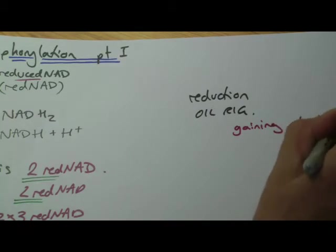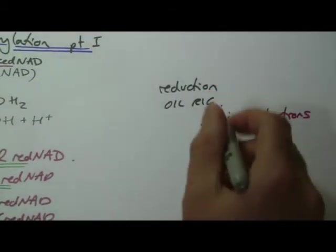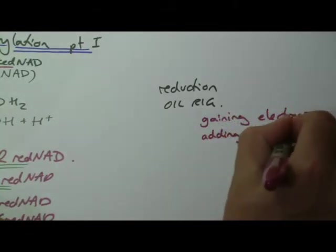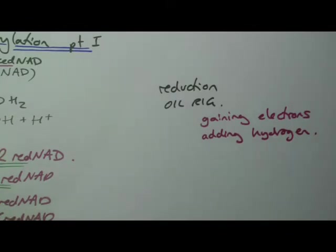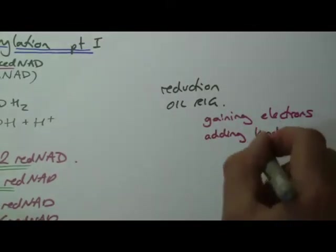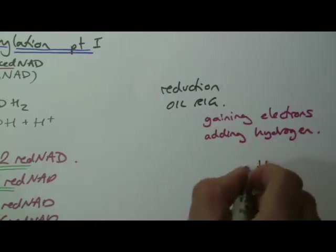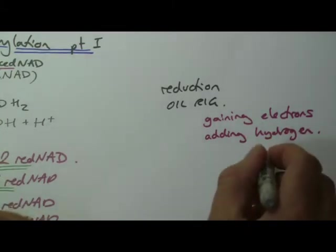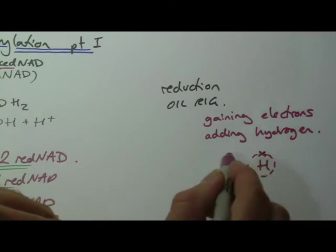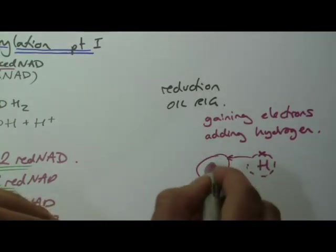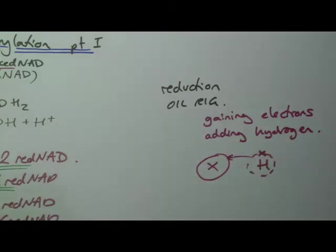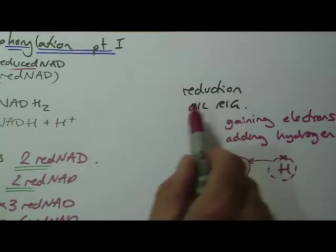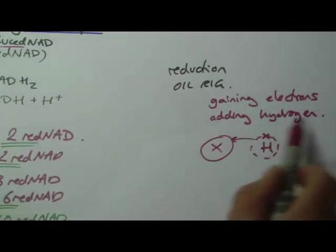That will become important to us in a second when we look at the electron transport chain. But another way you can think of it is adding hydrogen. If you think about that for a second, if I have a molecule like the NAD up here, if I add hydrogen to it - hydrogen just has one electron in its outside orbit. When it joins chemically to something, it tends to give that electron up. So whatever it joins to has gained the electron from it. That's why adding hydrogen to something is often the same as gaining electrons. Technically, reduction is gaining electrons. It's just easier to think of it as adding hydrogen.